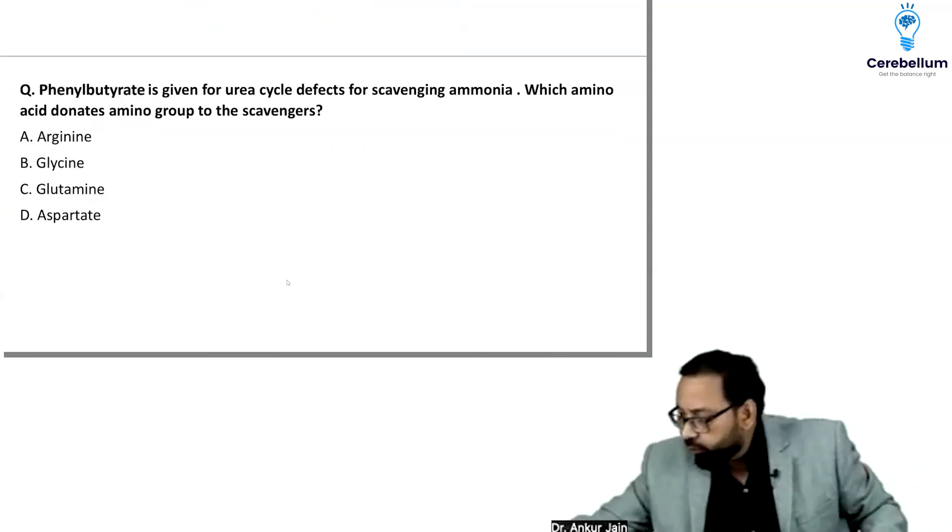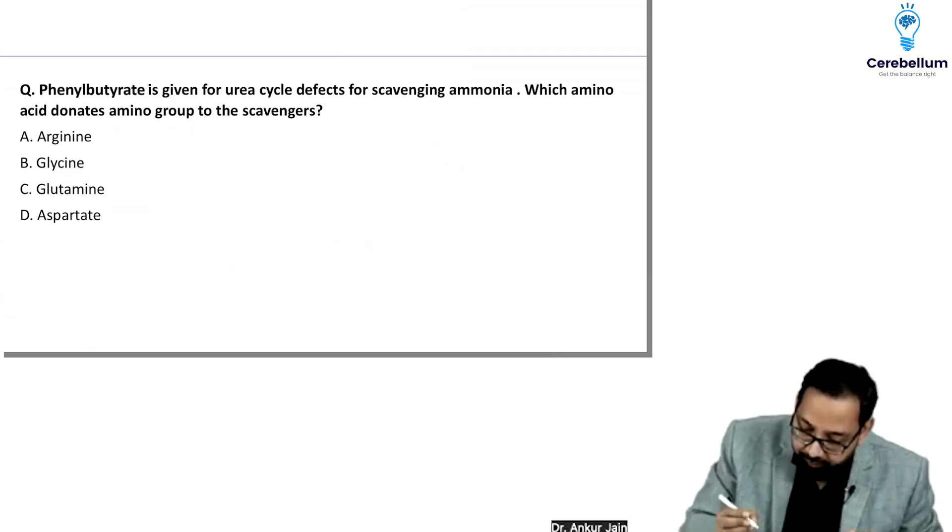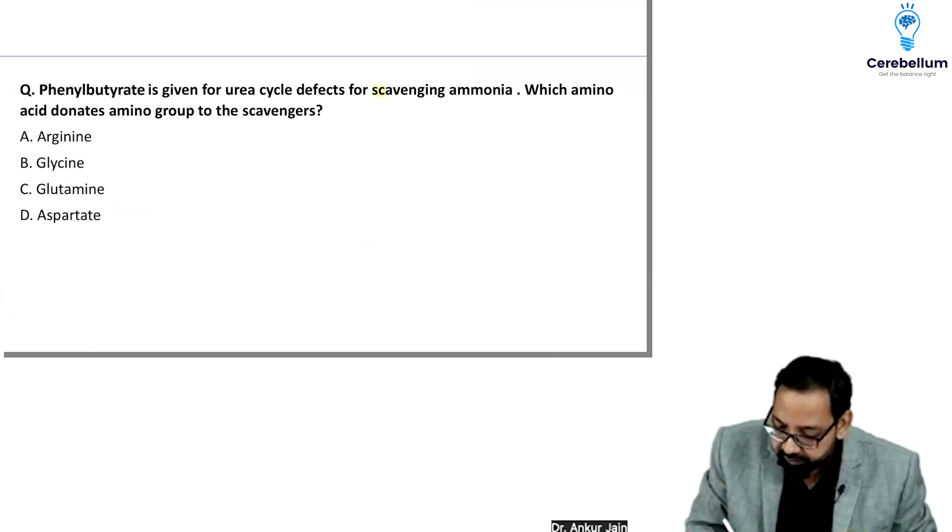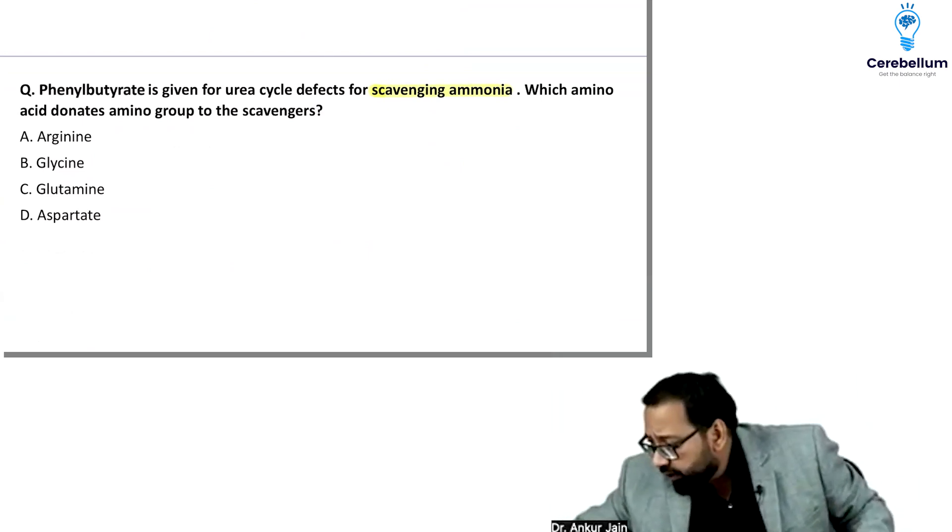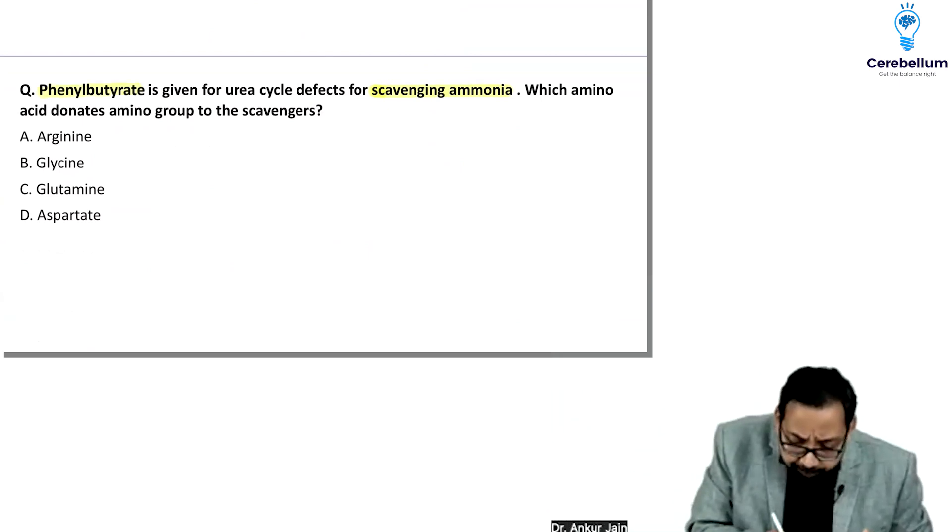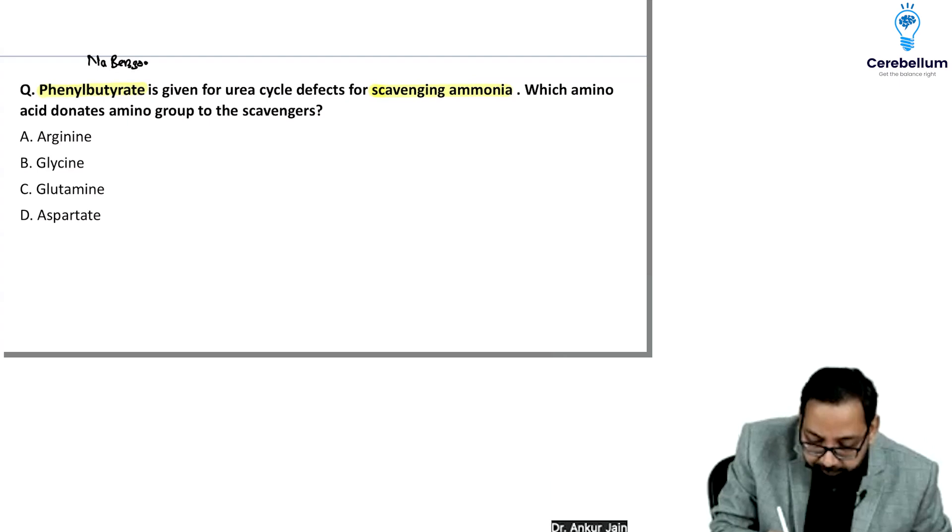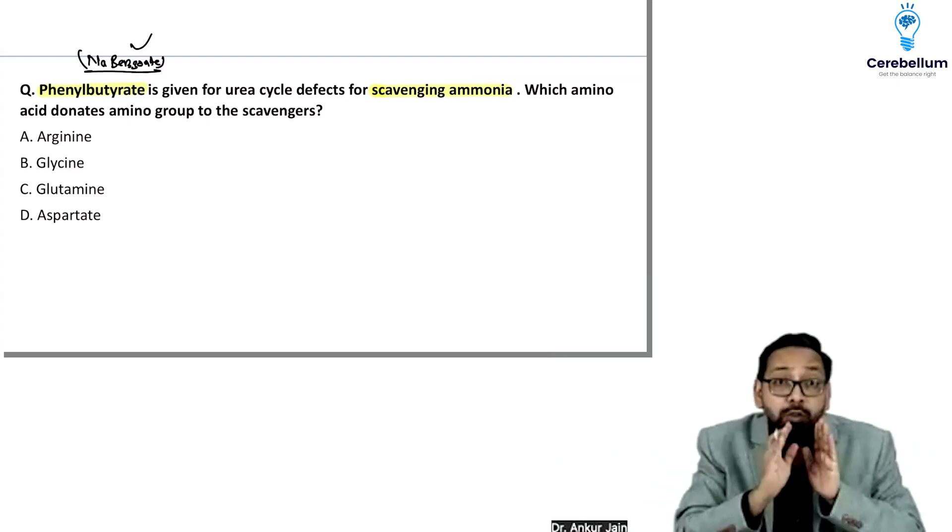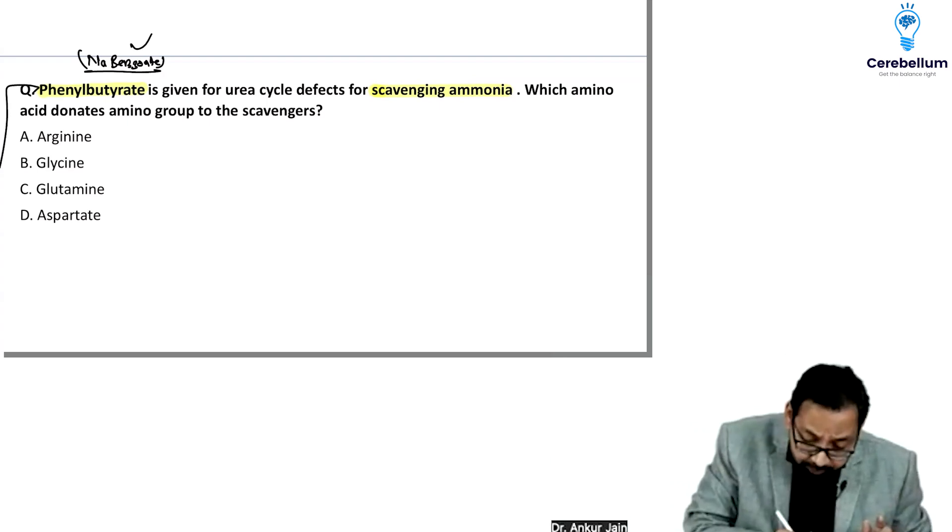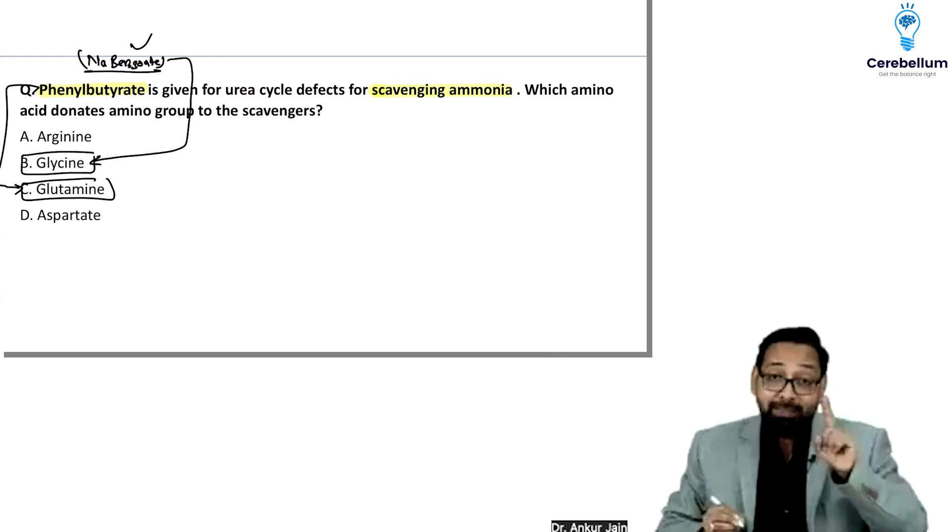First question: phenylbutyrate is given in urea cycle defects for scavenging ammonia. When urea cycle defect occurs, ammonia increases. Students mentioned sodium benzoate was also given. If phenylbutyrate is given, the answer would be glutamine. If sodium benzoate is given, the answer would be glycine. Point out these tricky questions.